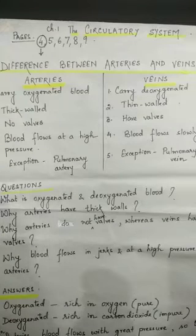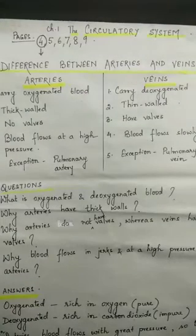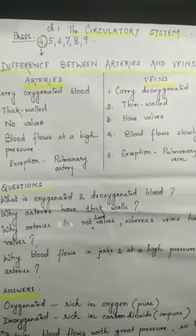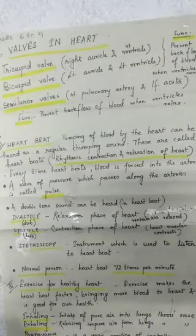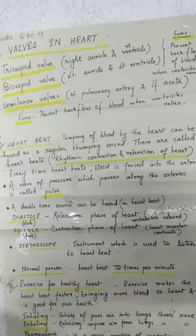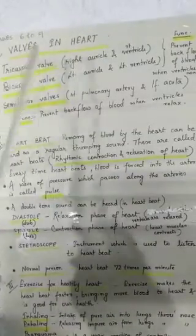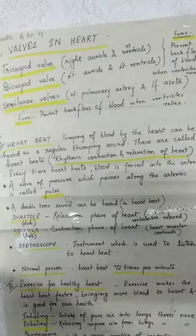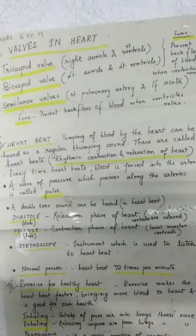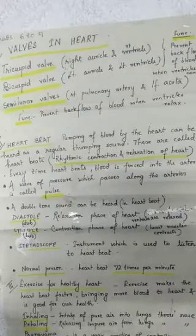We will do the remaining pages next time. Today I will teach you the remaining part of the chapter, that is Human Circulatory System, pages 6 to 9. First topic: valves in heart. We have already discussed the valves present in veins which prevent backflow of blood in veins. Similarly, valves are present in the heart also.